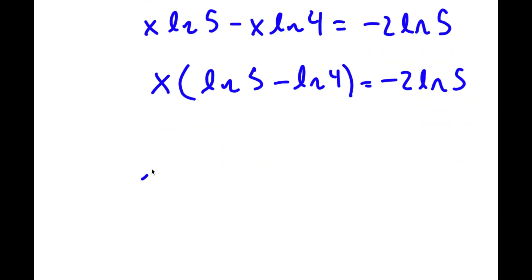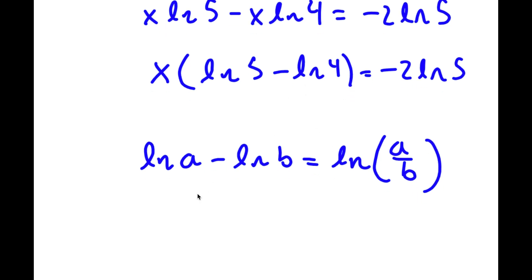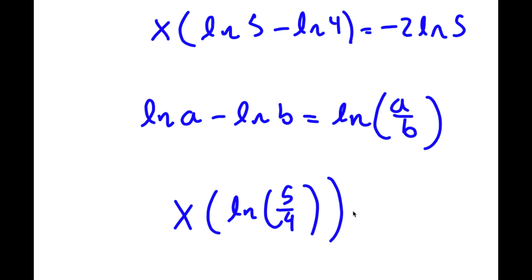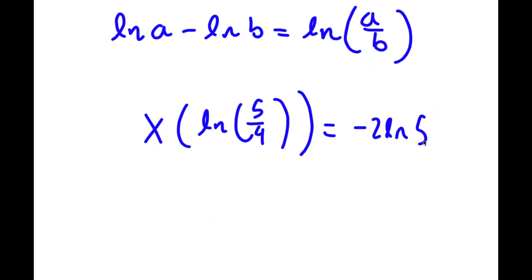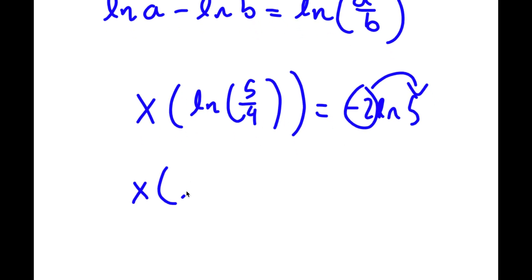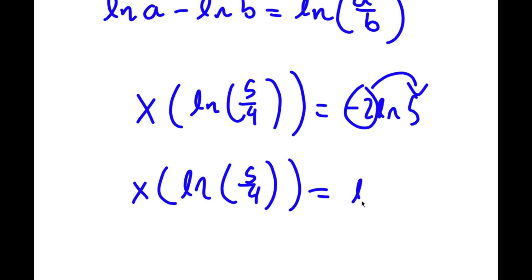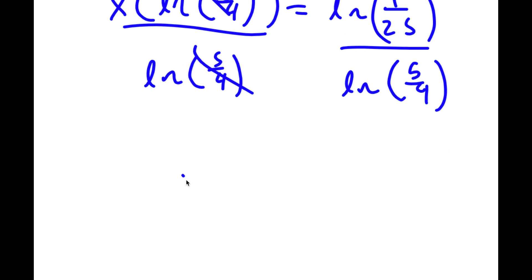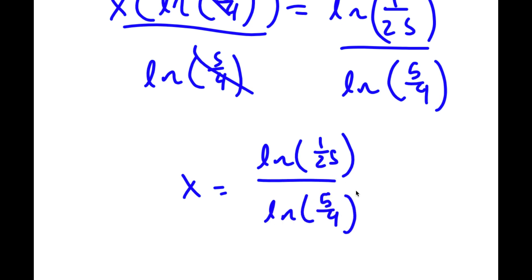Now, ln a minus ln b is the same thing as ln of a over b. So ln 5 minus ln 4 becomes ln of 5 over 4, giving x times ln of 5 over 4 is equal to negative 2 times ln 5. Remember, I can move the coefficient to the front, so negative 2 ln 5 is equal to ln 5 to the power of negative 2, which is the same as ln of 1 over 25. Dividing both sides by ln of 5 over 4, I get x is equal to ln of 1 over 25 divided by ln of 5 over 4. So this is my answer.